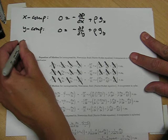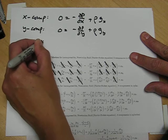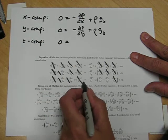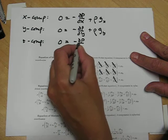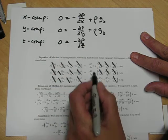And the z component, zero equals, nothing on the left is remaining, minus dp dz plus,